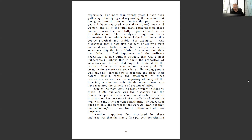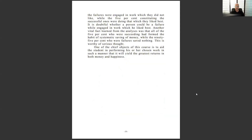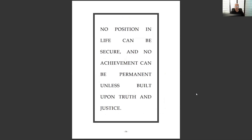'One of the most startling facts brought to light by these analyses was the discovery that 95% of those who were classed as failures were in that class because they had no definite chief aim.' 95% — highlight that. The five percent constitute the successful. This seems to be a common ratio: about 90-95% of people who retire are not financially ready; about five percent are prepared. Not planning, not doing homework, not living the life. 'No position can be secure unless built upon truth and justice' — that's integrity.